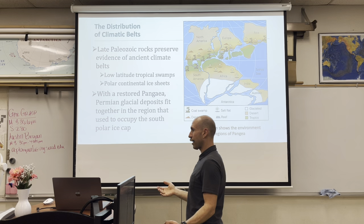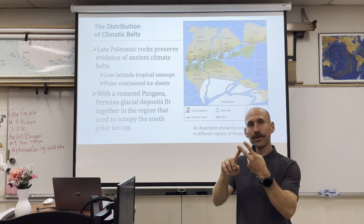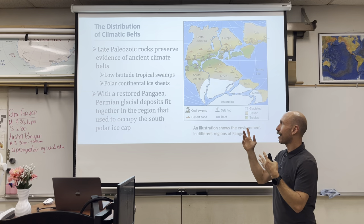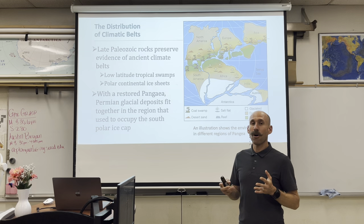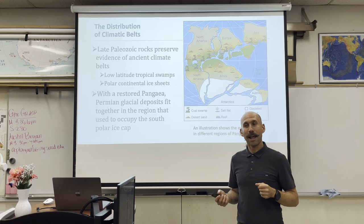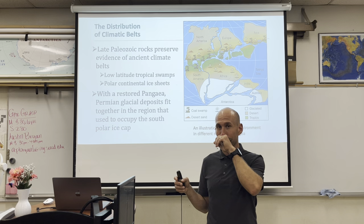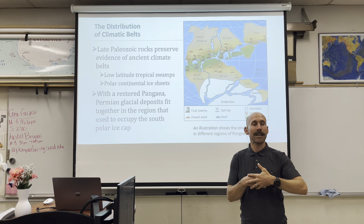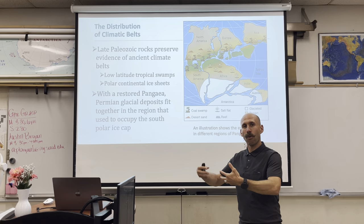That gives us four lines of evidence: puzzle piece fit, fossils, matching geologic units, and climatic belts. But the missing piece was that nobody believed Wegener — other scientists said prove it, and he couldn't. He had some ideas but they proved wrong. Continental drift itself proved right, but the mechanism was not there. That's why we have the theory of plate tectonics rather than the theory of continental drift. It's more comprehensive.